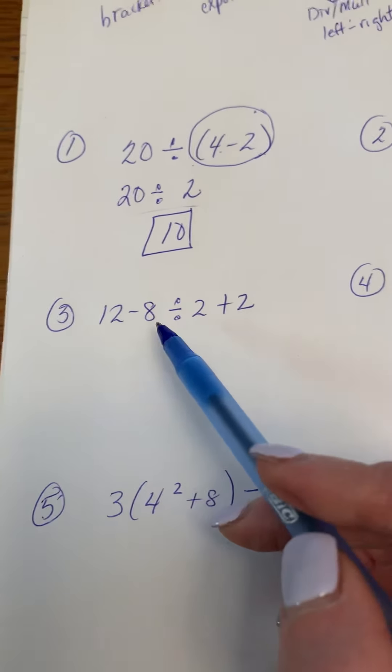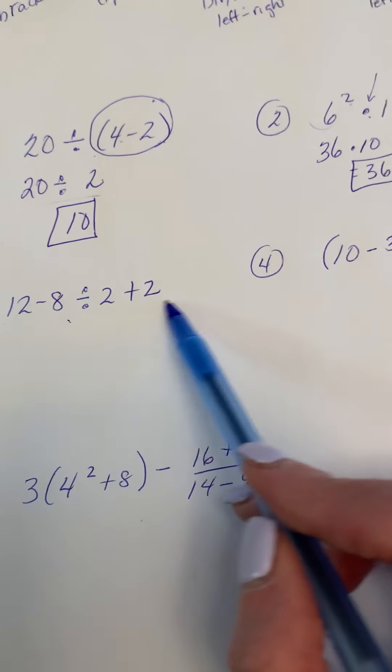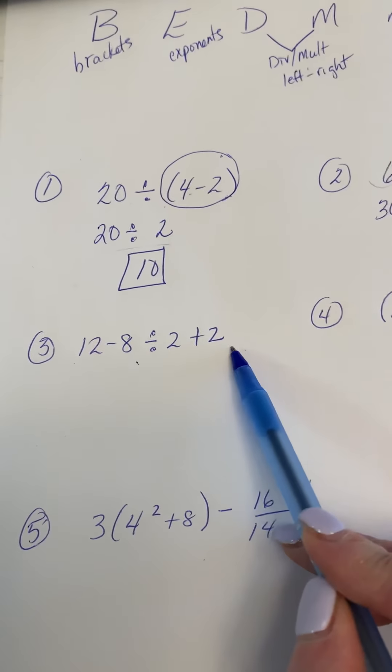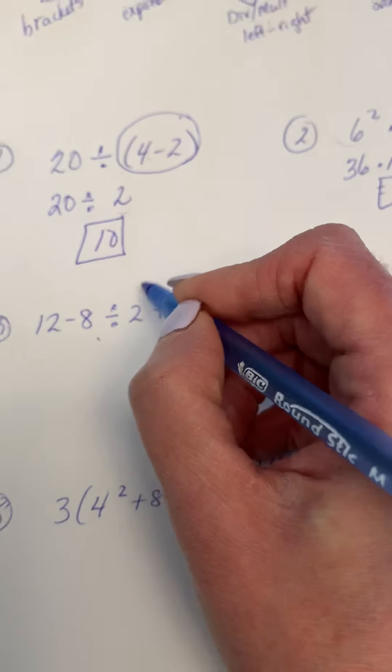Now we're going to move on to a little bit longer of a question. We're going to look through, there are no brackets. We're going to look through, there are no exponents. So now we know with BEDMAS we're going to look for our division and multiplication. And our division looks like this.